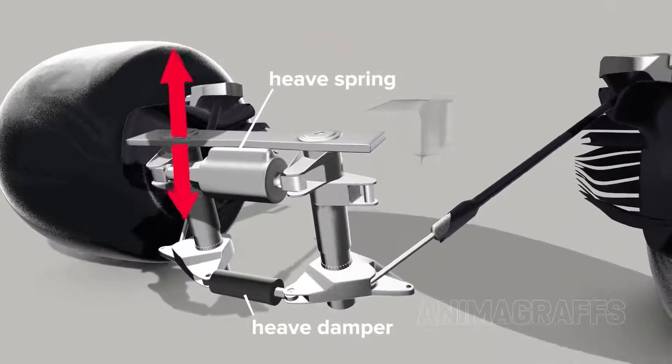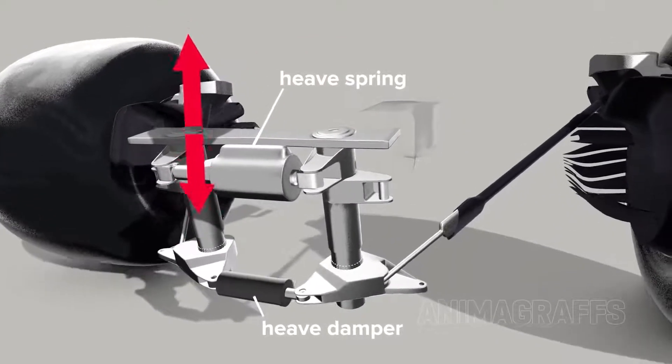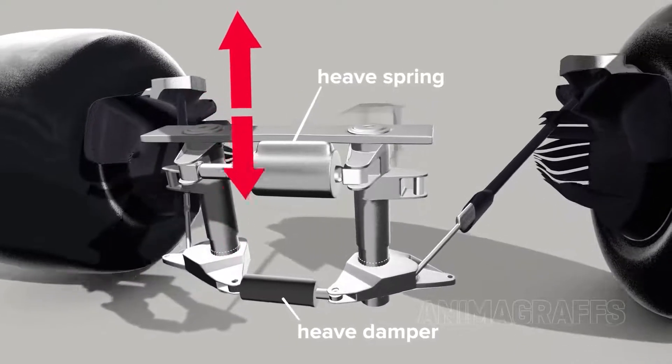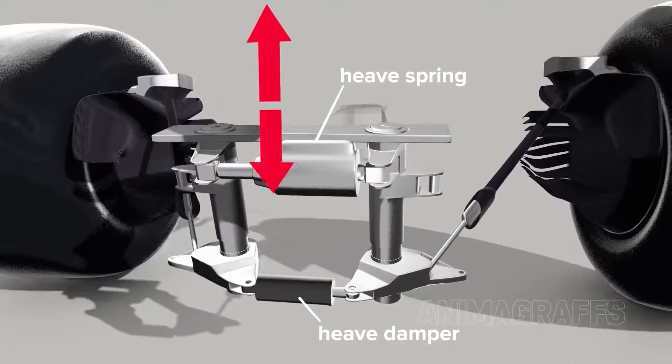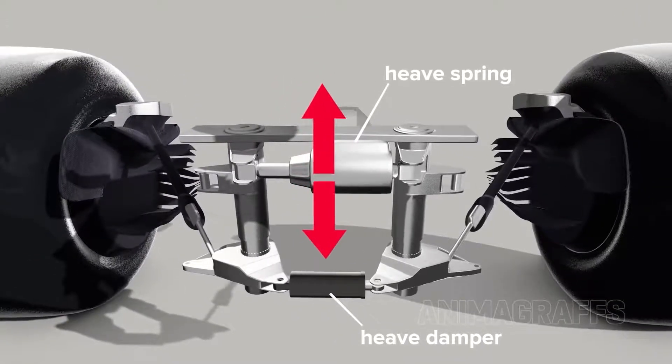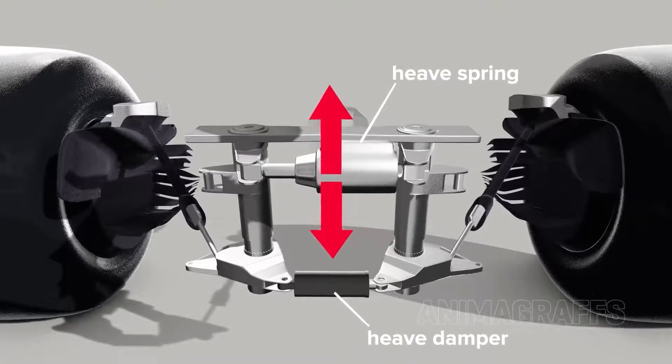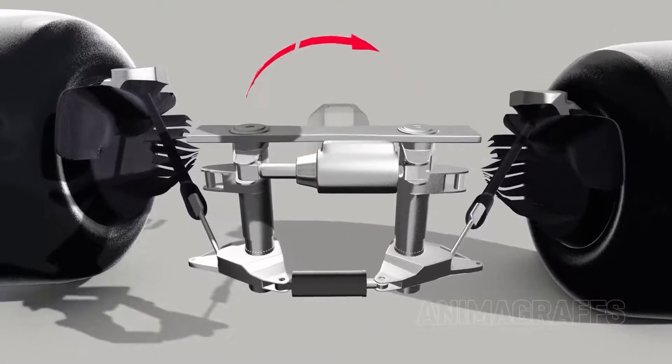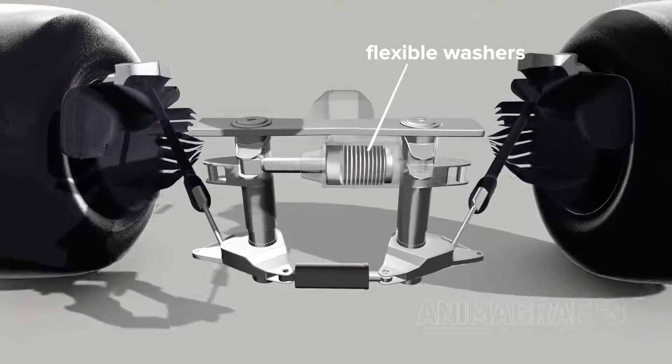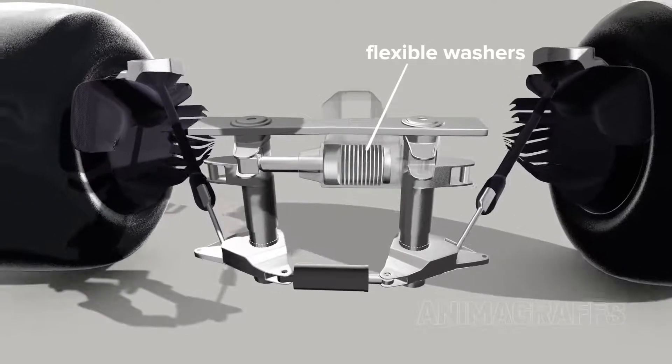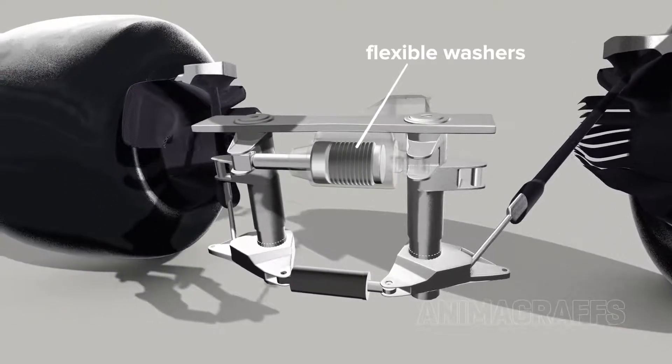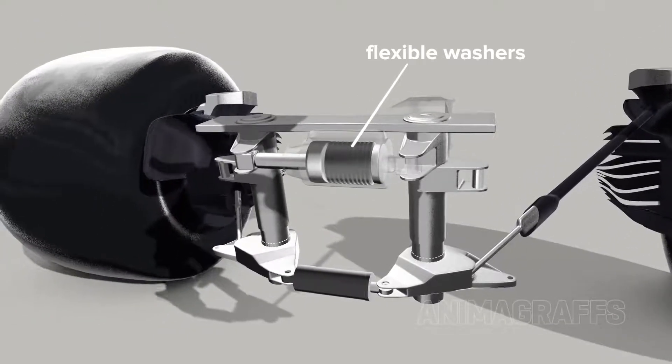Heave is the vertical position of the car, which is critically important for proper aerodynamics. The heave spring and damper cleverly come into play when both sides move up or down together, for example during acceleration or braking, but are mostly inactive for other movements. The heave spring in our model is a stack of flexible, cone-shaped washers that compress together under load. Washers can be added or subtracted for fine adjustments.